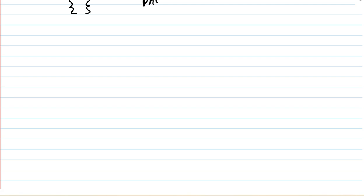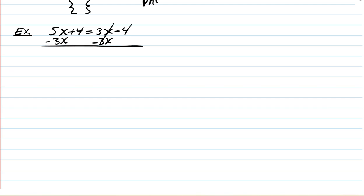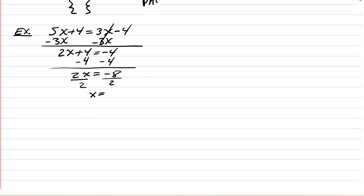Let's look at examples. Solve 5x plus 4 equals 3x minus 4. We have variables on both sides, so subtract 3x: 2x plus 4 equals negative 4. Subtract 4: 2x equals negative 8. Divide by 2: x equals negative 4. This is a conditional equation with solution set {negative 4}.